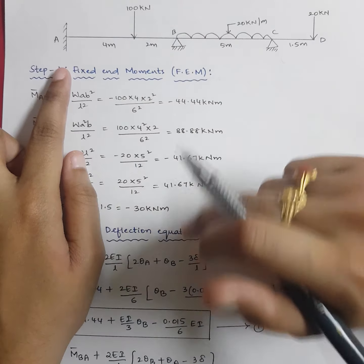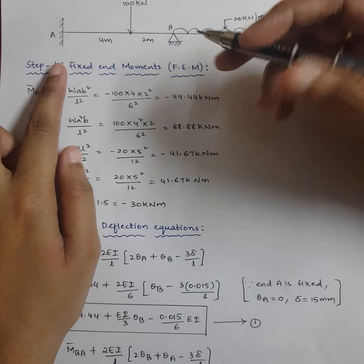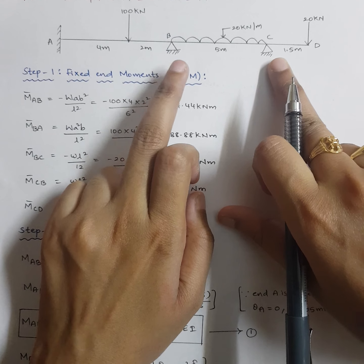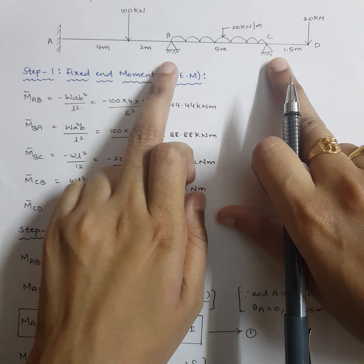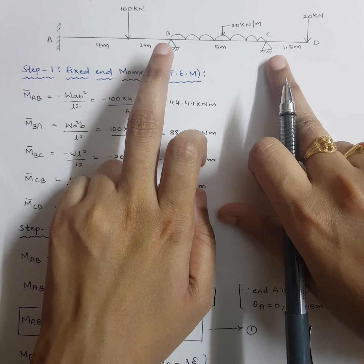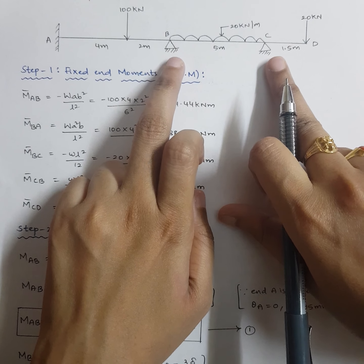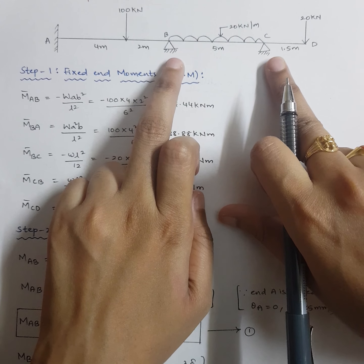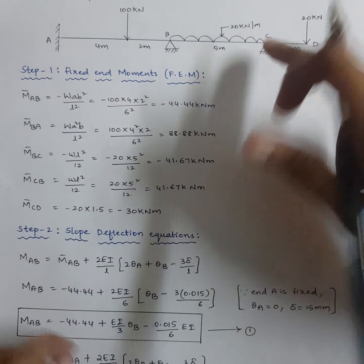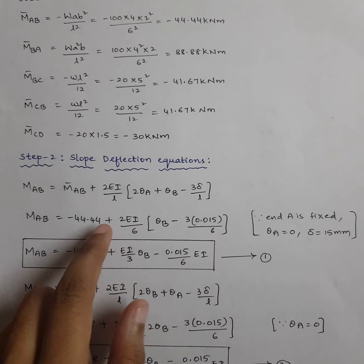When you are doing span BC, B is on the left-hand side — the sinking support is on the left-hand side. So when substituting for delta, substitute minus 0.015. Remember: right-hand sinking → positive delta; left-hand sinking → negative delta.